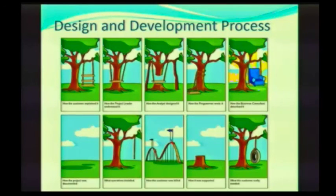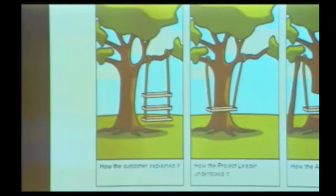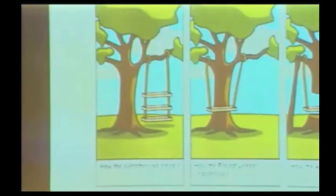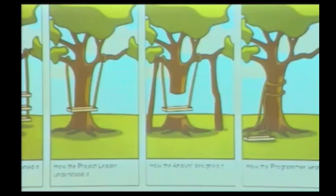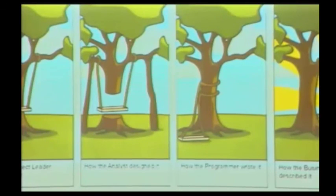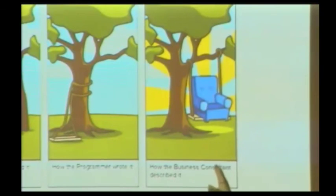Then you have a project leader — the person leading the project, talking to your customer. That's how they understood it. Then the project leader takes it to the design analyst, who goes and designs it but realizes that's not going to work and tries to fix it. Then it goes over to the programmer, who says this doesn't make sense but I've got to get it out there — I have a deadline. At this point your client is getting kind of nervous, so your business consultant is describing what they're going to get — look at that, they'll take that.